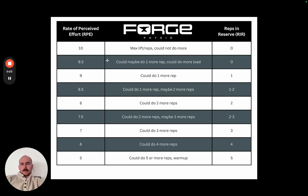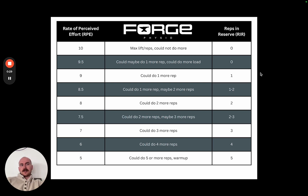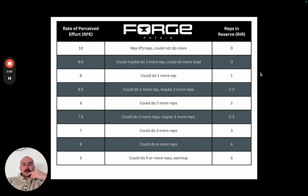This is what we call Rate of Perceived Exertion, or RPE, on the left, and Reps in Reserve, or RIR, on the right. This is an important training heuristic — a rule of thumb — that we can use to make sure you're training hard enough, make sure you're not training too hard, and make sure we're getting some overload over time. It allows us to regulate training intensity relative to how you feel, which is influenced by life stressors.